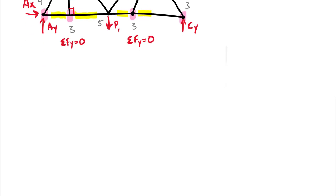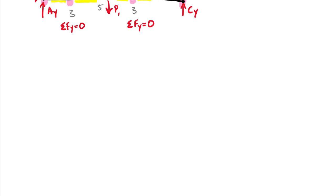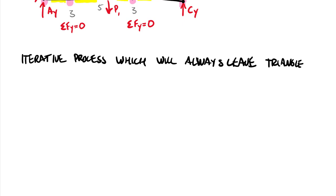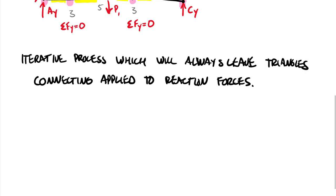One of the last things to say about zero force members is the idea that it is an iterative process. It is an iterative process which will always leave triangles connecting applied to reaction forces. So the idea of it being iterative it means that once you get rid of some go look for more. Okay because you can actually find more in a system.